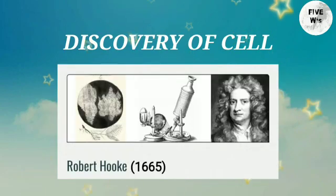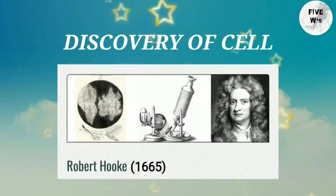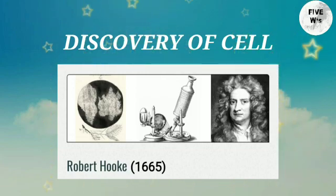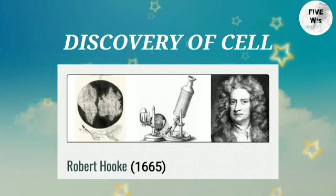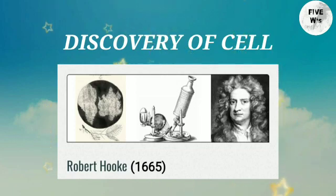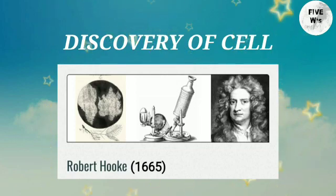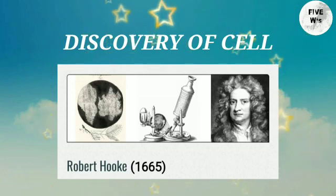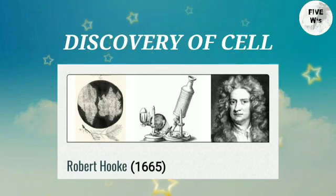Discovery of cell: in 1665, Robert Hooke examined a thin piece of cork. It looked like small rooms, and he named those small rooms 'cells.' However, those were only dead plant tissue without protoplasm.